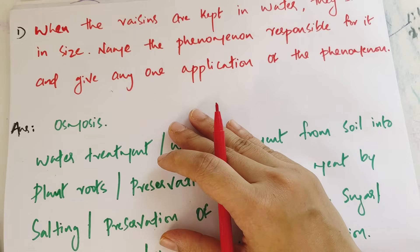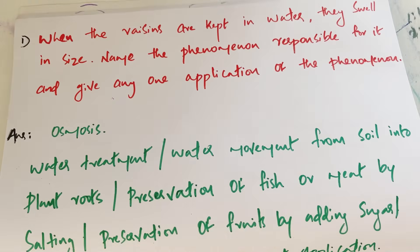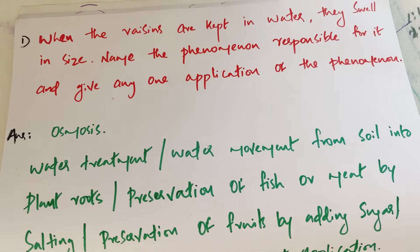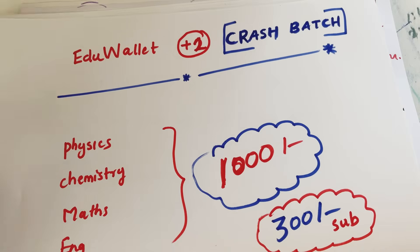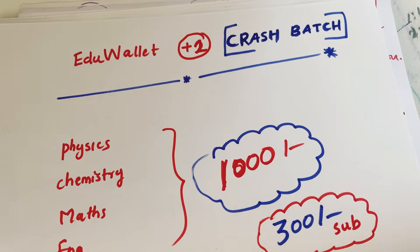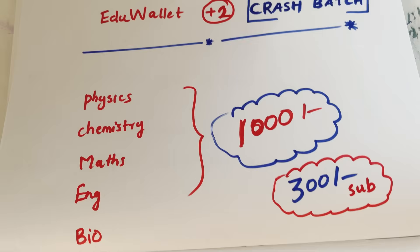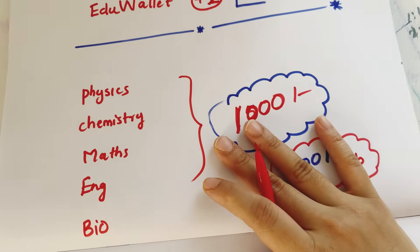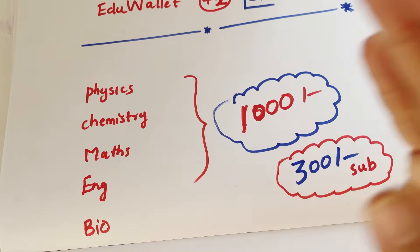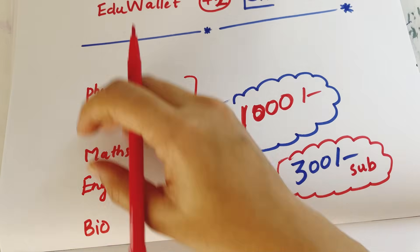First of all, December last day is when we have the Christmas exam. We are going to show you a plus one improvement batch, plus two crash batch. Now I'm going to show you a new pattern, a basic batch. The plus two crash batch covers all subjects — it will be available for every subject.